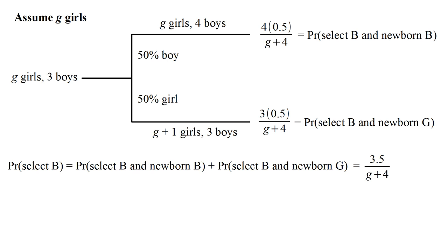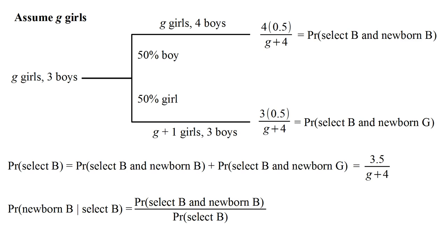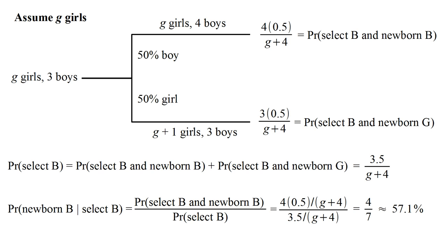Intuitively, we either have three or four boys the next day with equal chance, so we have 3.5 boys on average, divided by g plus 4 total children. The conditional probability of having a newborn boy given that we selected a boy is the ratio of the top branch divided by the sum of the two branches. You can see that g plus 4 cancels out. This simplifies to 4 over 7, approximately 57.1%. So there are two counterintuitive things: one, it doesn't matter the number of girls we start with, and two, the probability is more than 50%.